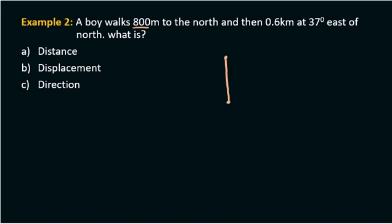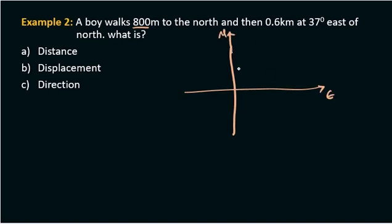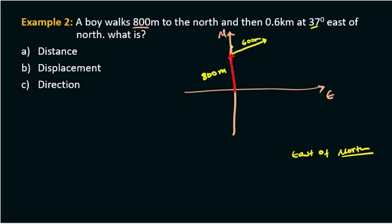Using an x-y plane to explain the directions, north is the positive y-axis and east is the positive x-axis. The second leg is 600 meters at 37 degrees east of north. The total distance is 800m plus 600m, which is 1400 meters, or approximately 1.4 km.